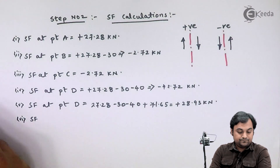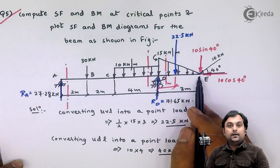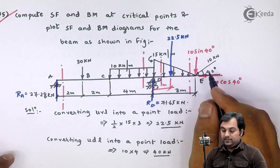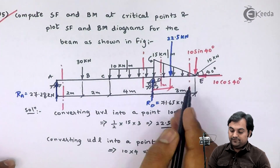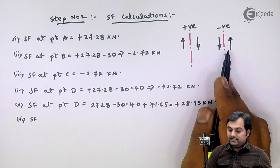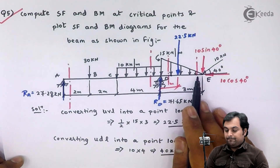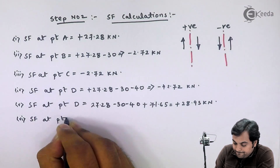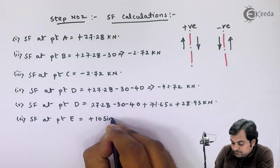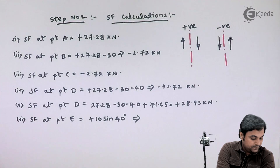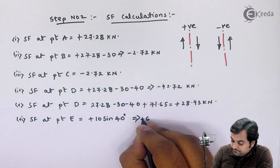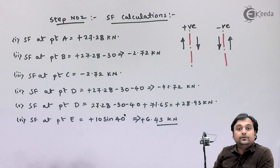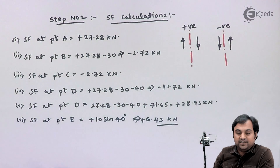Taking the section to the right of D: 27.28 minus 30 minus 40 plus RD which is 71.65 gives a positive value of 28.93 kilonewton. Then SF at point E, taking the section just to the left of E: 10 sin 40 is downward, and to the right of section it is a downward force which is positive, so plus 10 sin 40 gives 6.43 kilonewton. These are my SF calculations. Based on these shear force values at each point, we can now draw the shear force diagram.